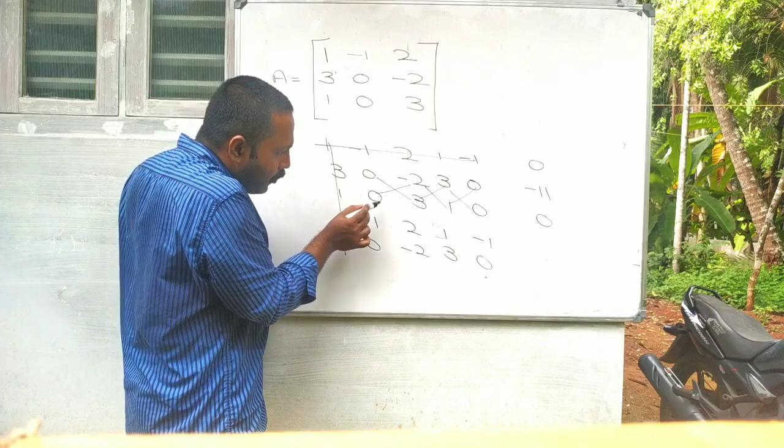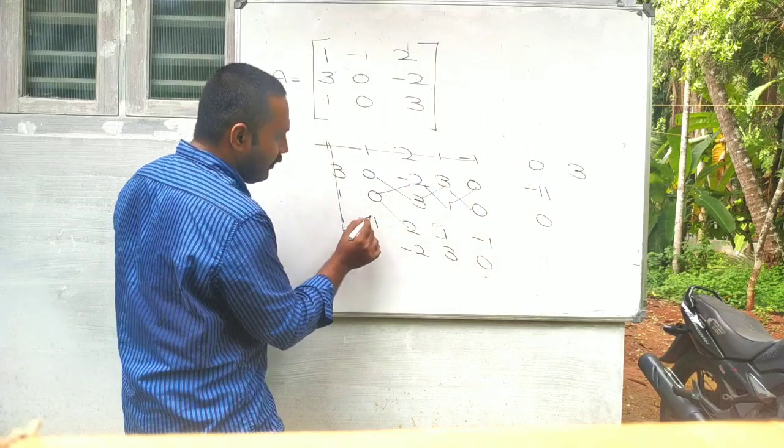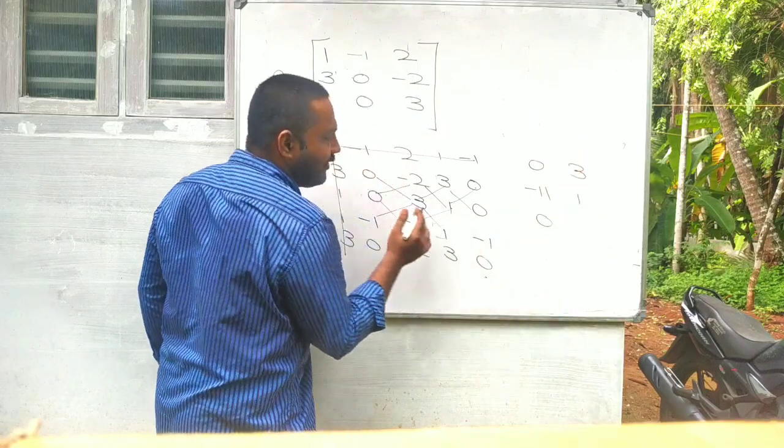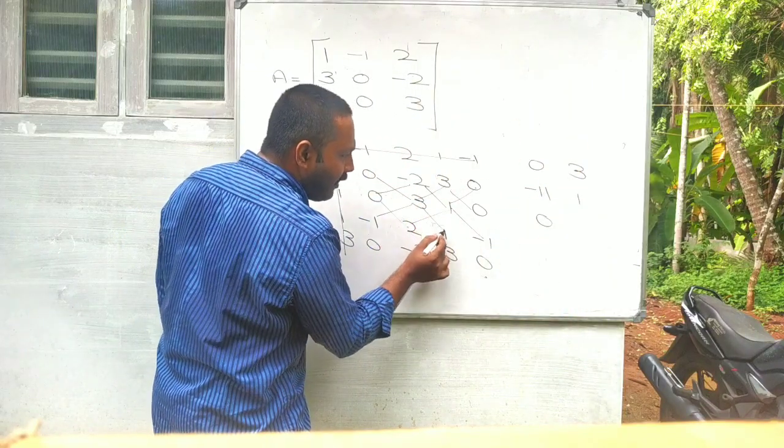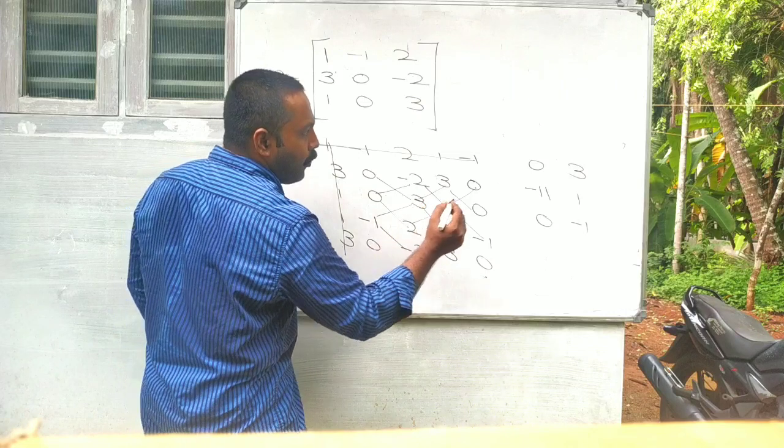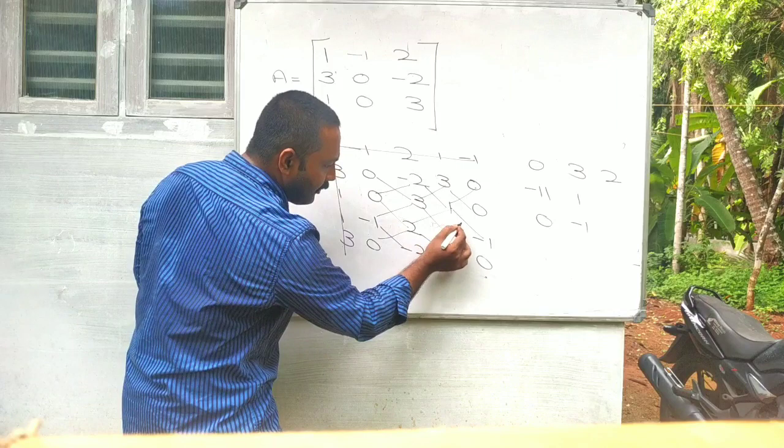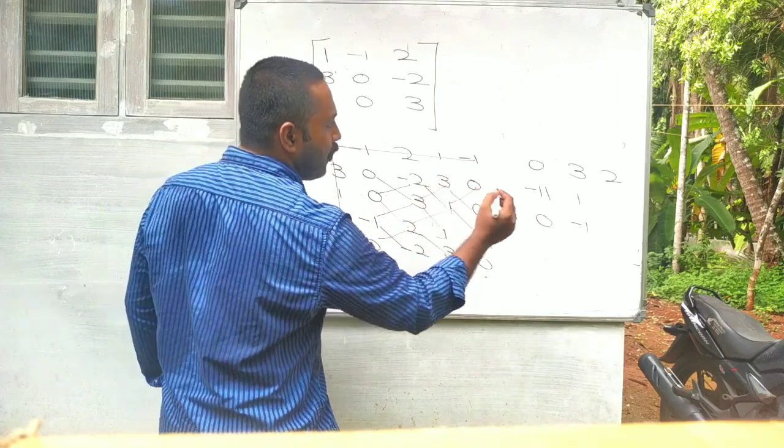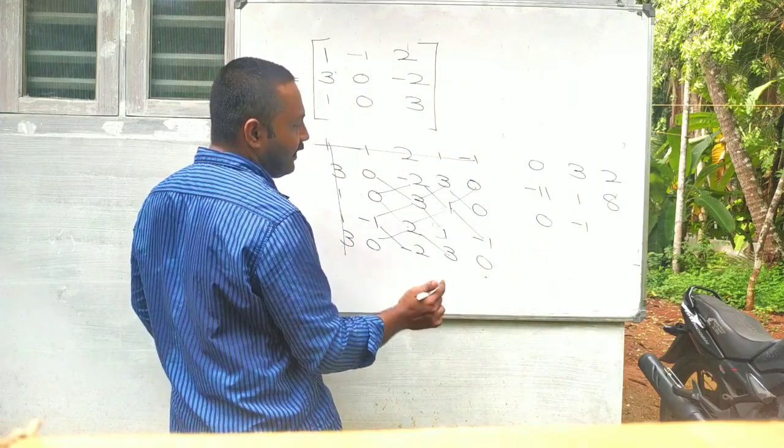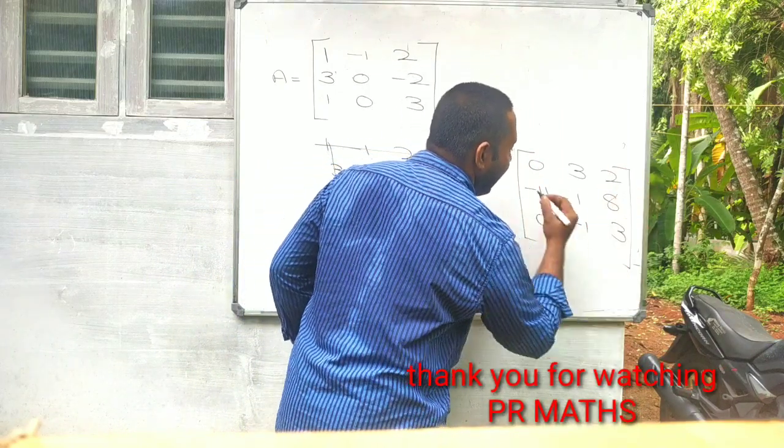Then 0 into 2. 0 plus 3. Then 3 minus 2, 1. Column wise. Row wise. Minus 1 minus 0, minus 1. 2 minus 0, 2. 6 minus 6 plus 2, 8. 0 plus 3, 3. This is the adjoint.